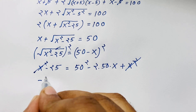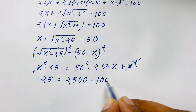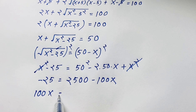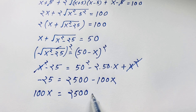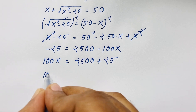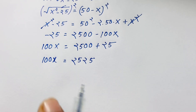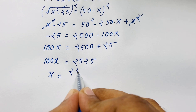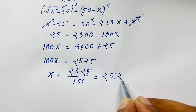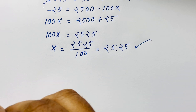Now x squared and x squared cancel out. So negative 25 equals 2500 minus 100x. If I move 100x to this side it will be positive 100x, and moving negative 25 gives us 2500 plus 25, which is 2525. So 100x equals 2525, and dividing both sides by 100 gives x equals 25.25. This is our final answer for this radical maths Olympiad question using the first method.